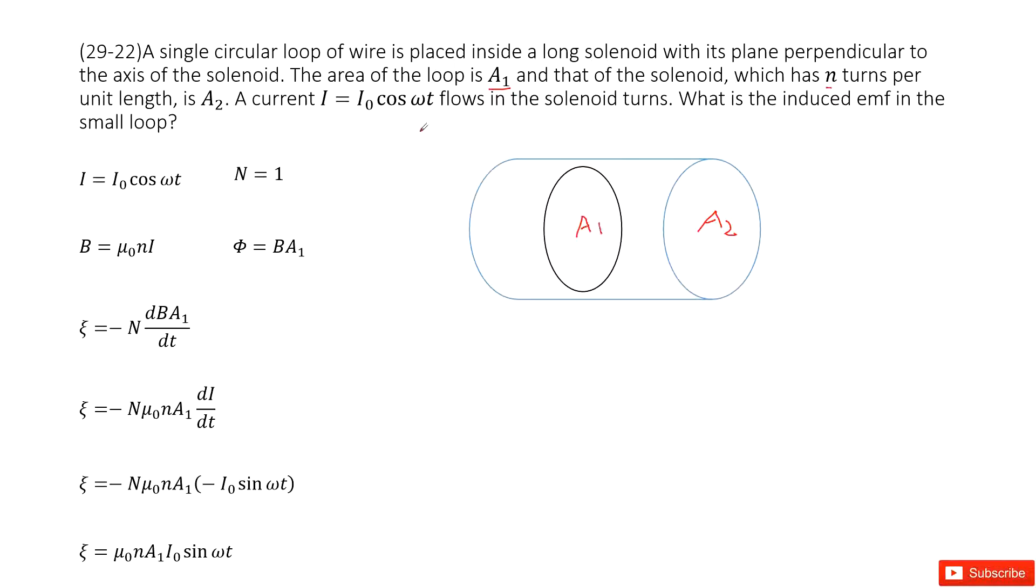Now, tell us the current flows in the solenoid follows this equation. You can see it changes with time t. And then ask you what is the induced emf in this small loop.